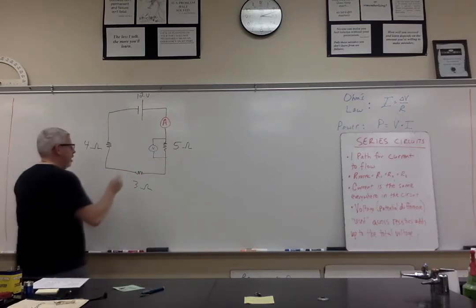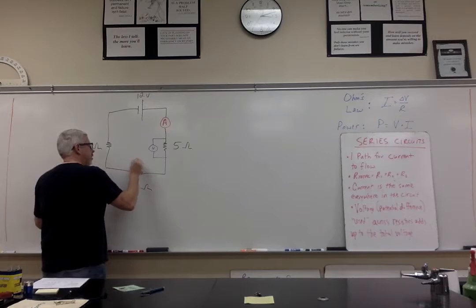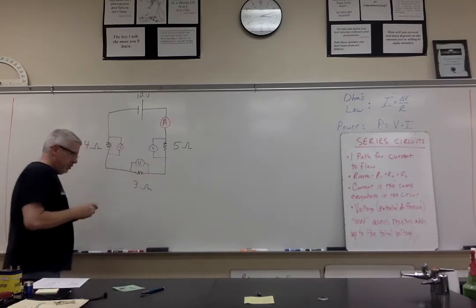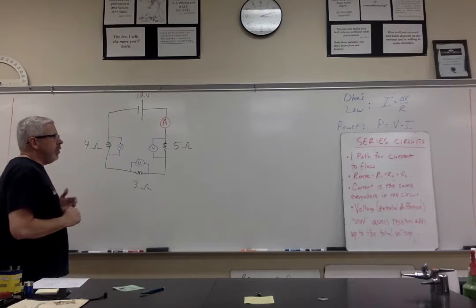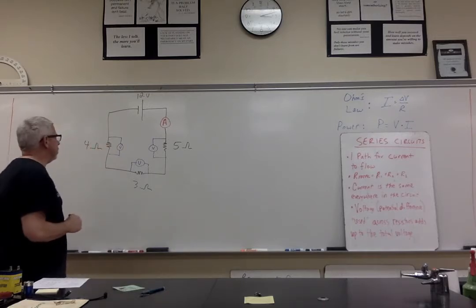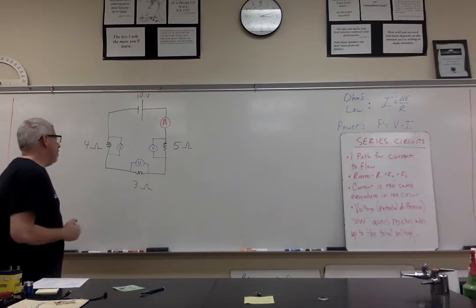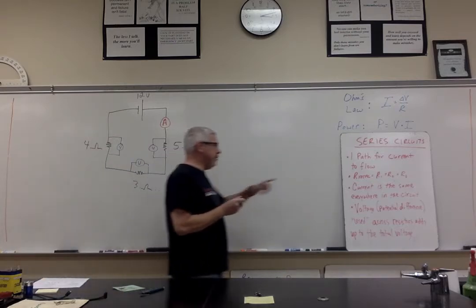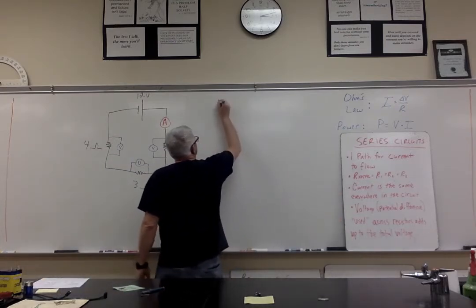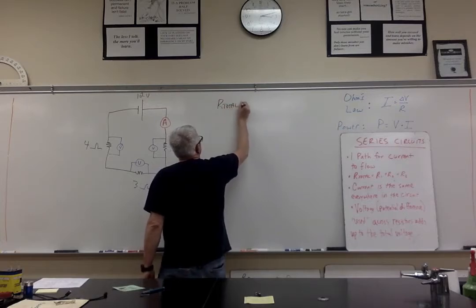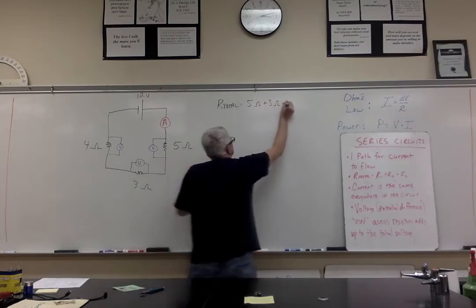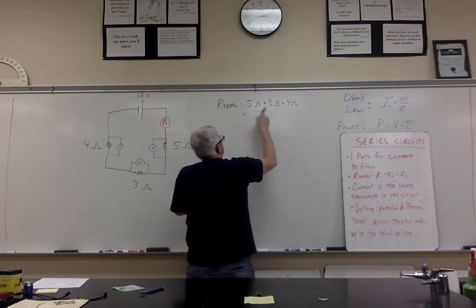We need to measure a difference from one side of this resistor to the other. So we're going to have a voltmeter here and a voltmeter here as well. The first thing I want to do — almost always when solving for circuits — is find the total resistance. For series circuits, I find it by simply adding up the resistors: 5 ohms plus 3 ohms plus 4 ohms. Five plus three is eight, eight plus four is twelve — so 12 ohms total resistance.